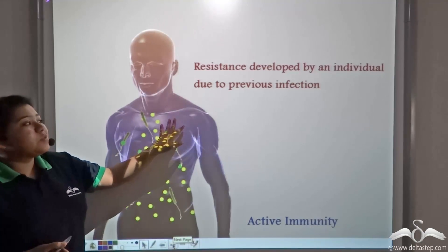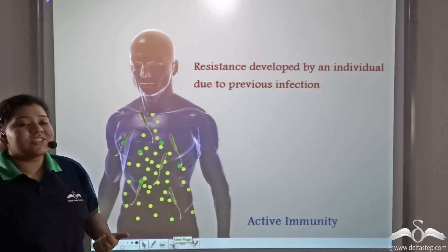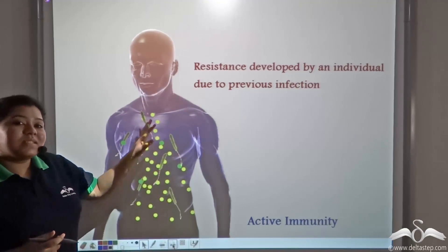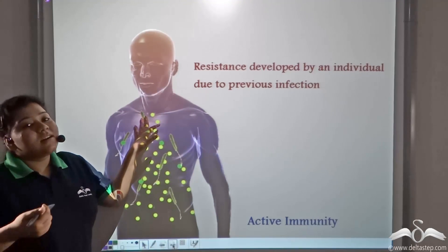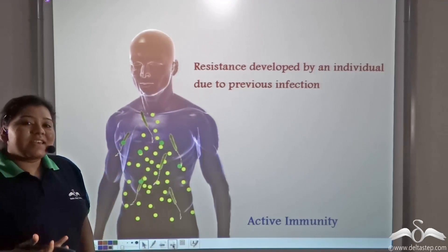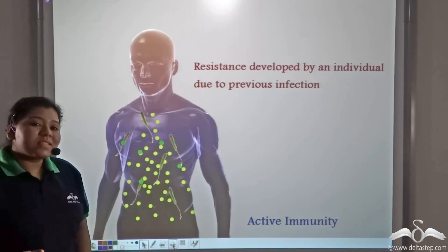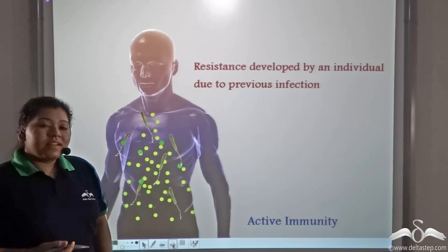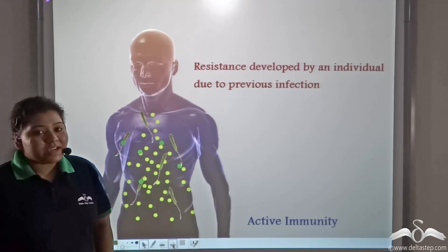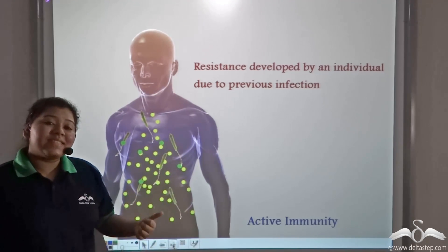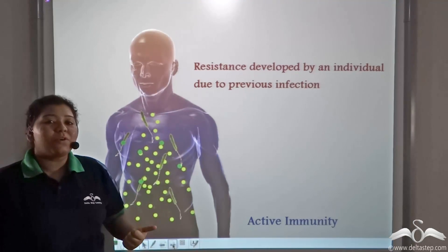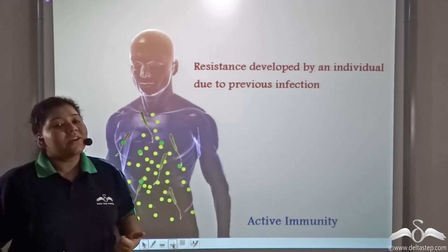Resistance developed by an individual due to a previous infection is known as active immunity. Suppose this person had been infected by a disease some two years back. His body has developed antibodies and anti-toxins against these microorganisms, and these antibodies stay in the body. So when the same disease-causing microorganisms try to affect the body a second time, these antibodies form a resistance against them and prevent the disease.